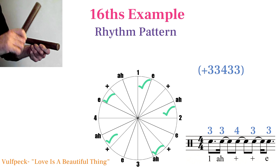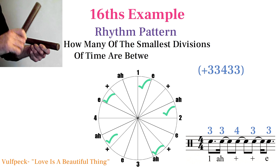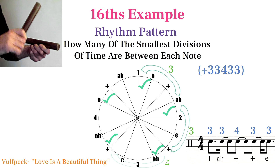The rhythm pattern shows us how many of the smallest divisions of time — pieces of the circle — are between each note. Between beat one and the 'and', there are three sixteenth notes of space. From the 'and' to the and of two, there's another three units of space, and four between the and of two and the and of three, and so on. Just like with interval patterns, when you add up the rhythm pattern it equals the total value of the circle — in this case, sixteen.